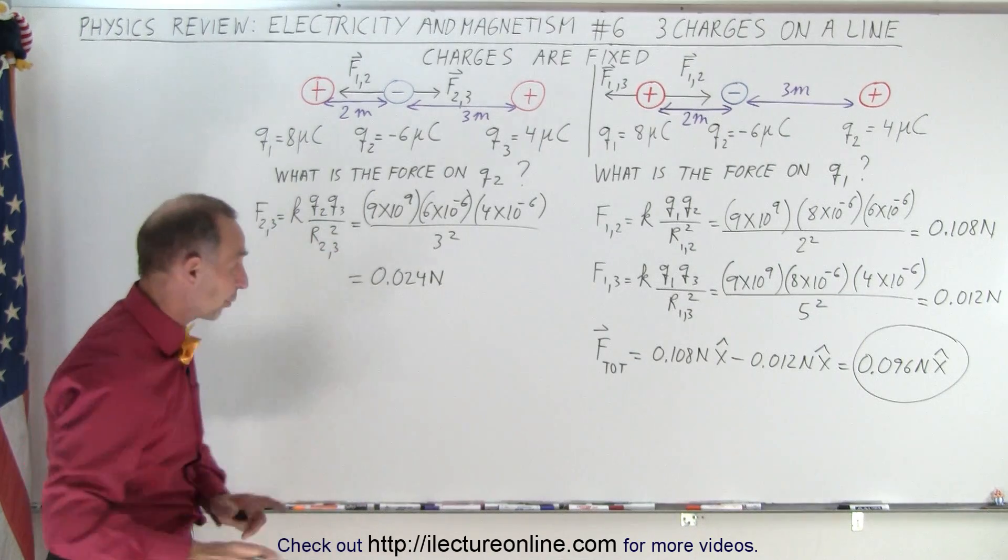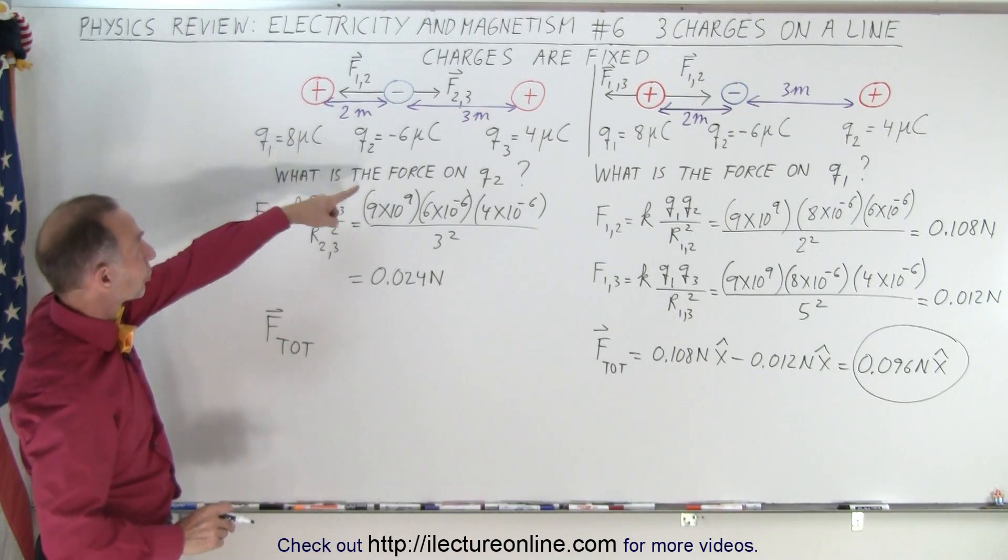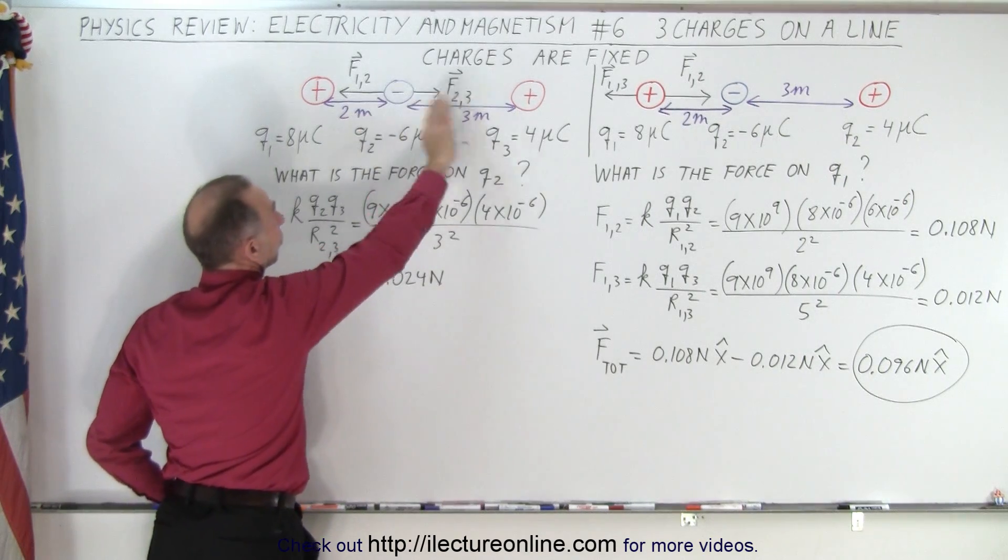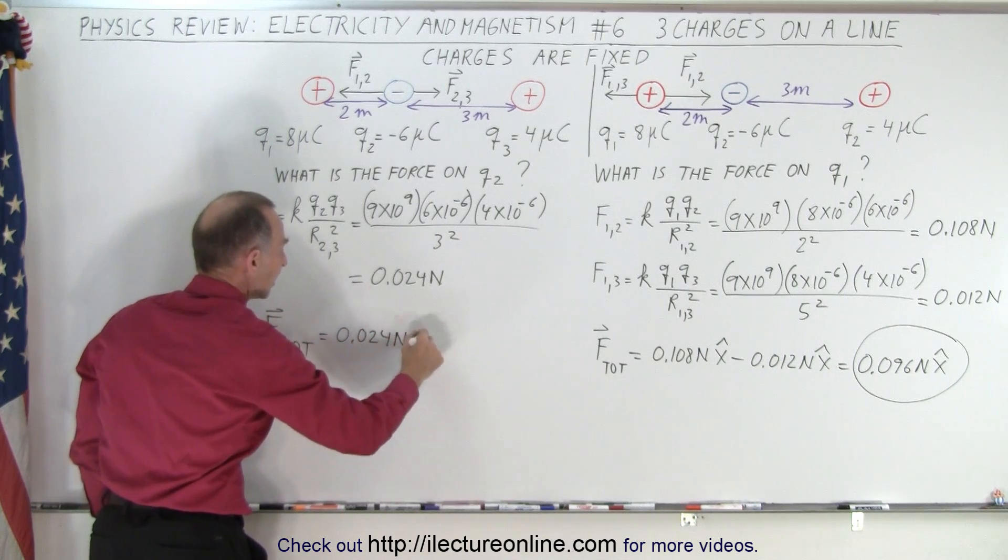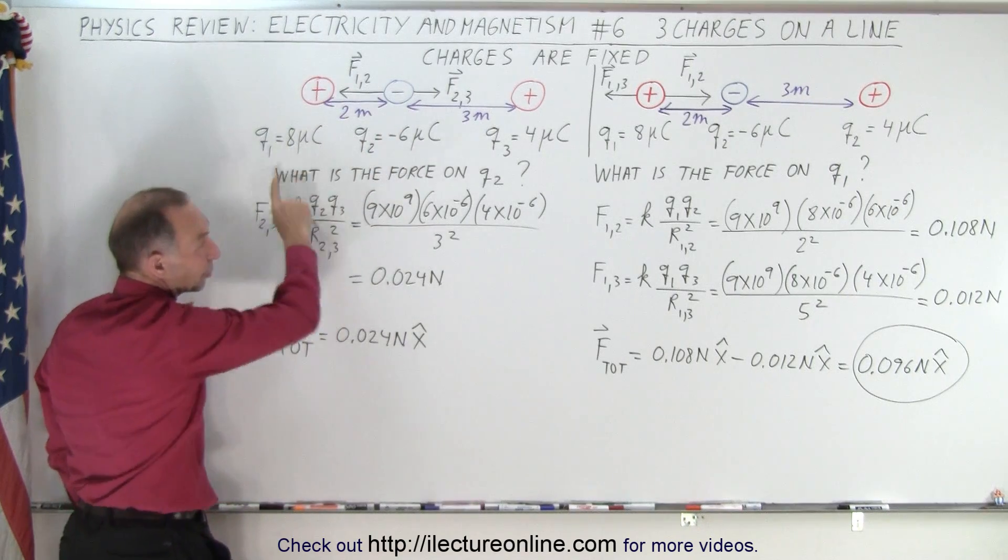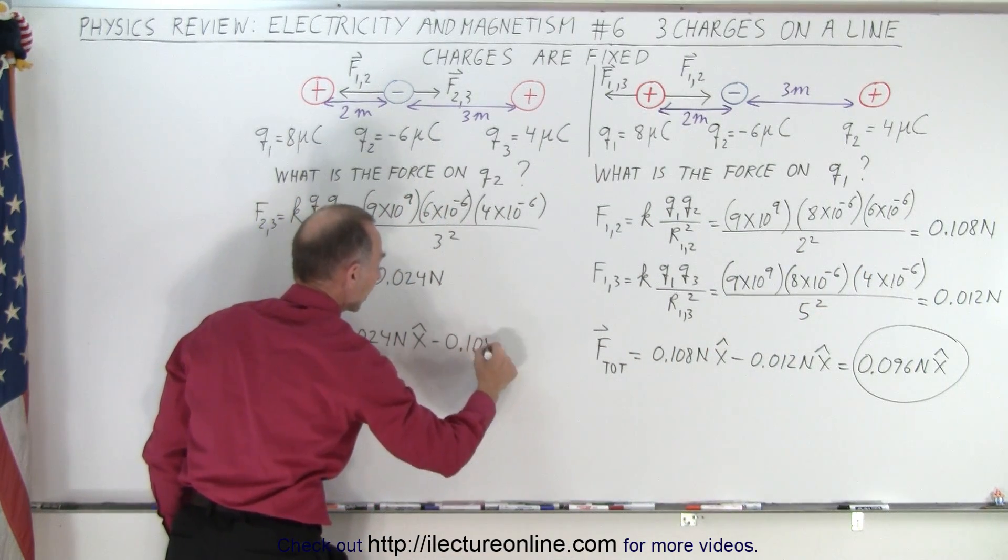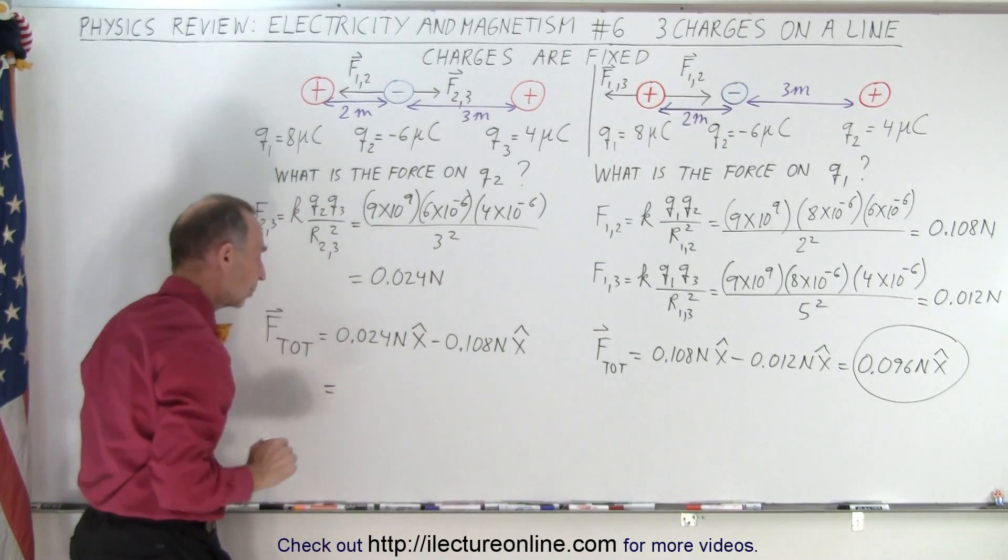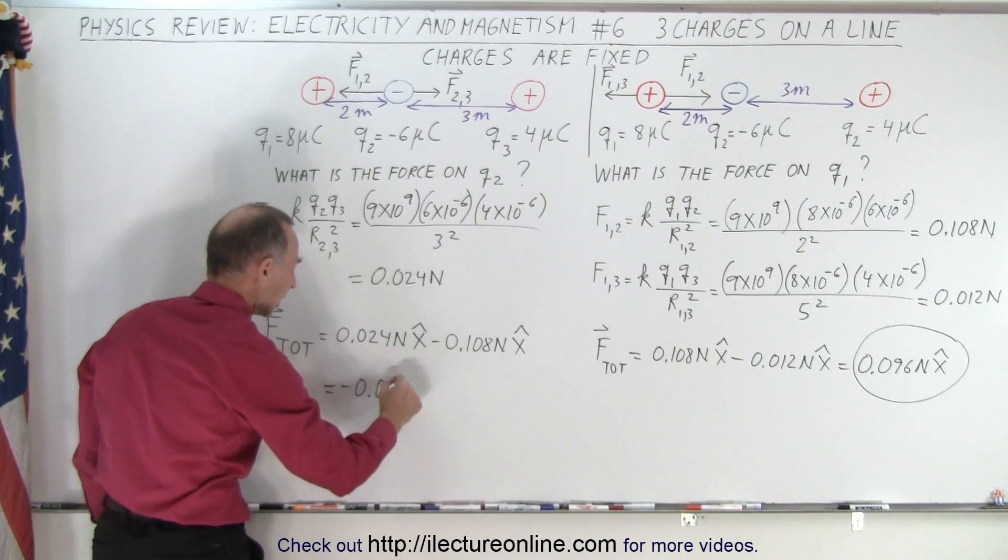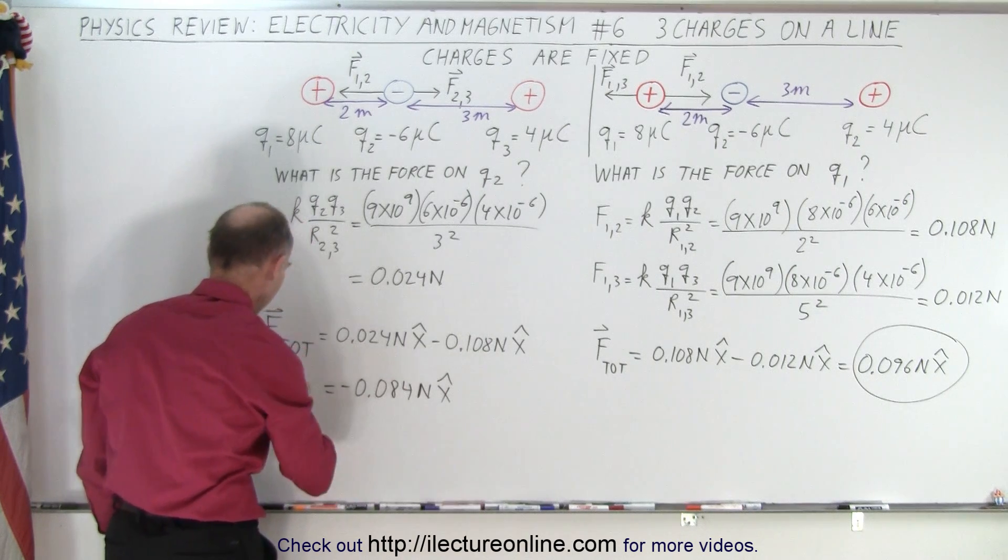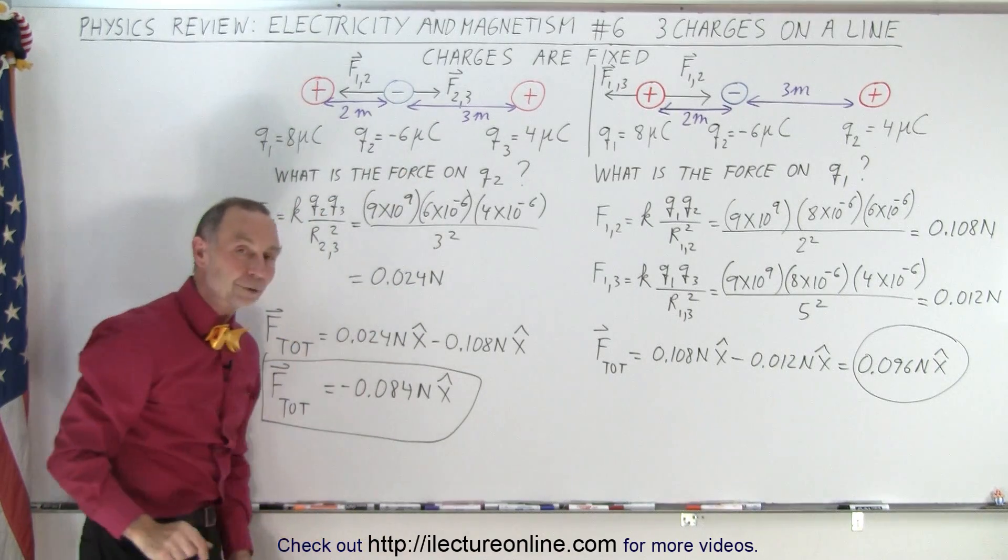And now we're ready to calculate the net force on that one. So the total force on the middle charge, on Q2, is going to be this force right here, which is to the right, F23, which we have right here. So this is equal to a positive 0.024 Newtons in the positive X direction, and then this one is to the left, that's F12, we have the magnitude there, that's negative 0.108 Newtons in the X direction. So now this would then add up to negative 0.084 Newtons in the X direction, and that is the total force on the second charge due to the presence of the other two.